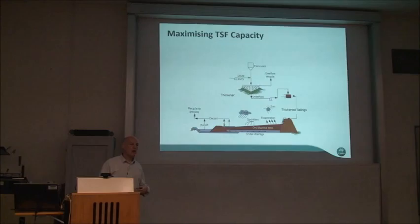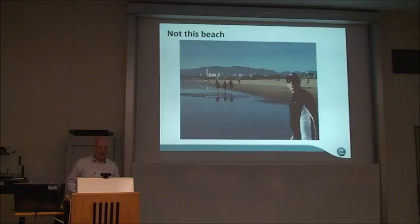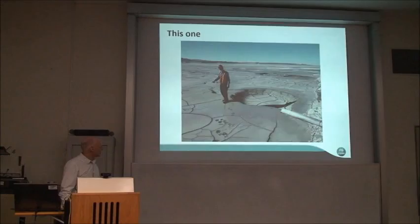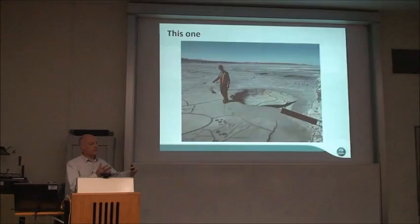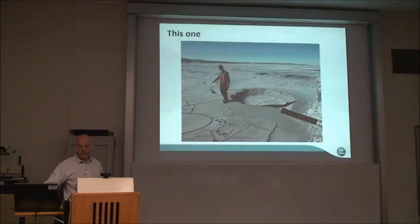It all comes down to understanding and controlling the beach — not the kind you'd swim on. This is the spigot where tailings are discharged after being pumped from the thickener, which can be hundreds of metres or several kilometres from the main site. In this Arizona example, we have a perimeter discharge with a series of spigots all the way around, pumping into what we call a plunge pool.